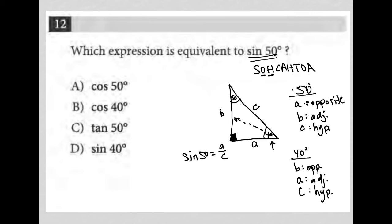How about answer choice A? The cosine of 50? Well, the cosine of 50 is the adjacent over the hypotenuse. So that would be B over C. That's not equivalent to A over C, right? Therefore, choice A is gone.